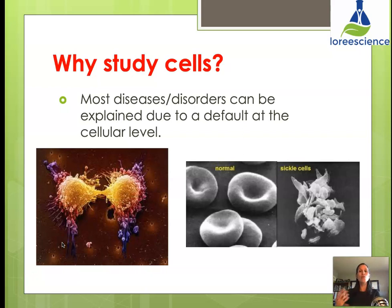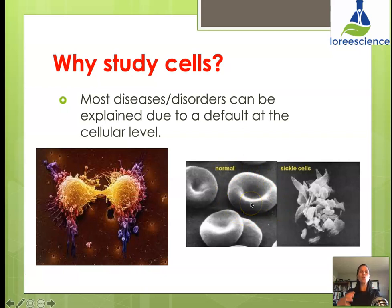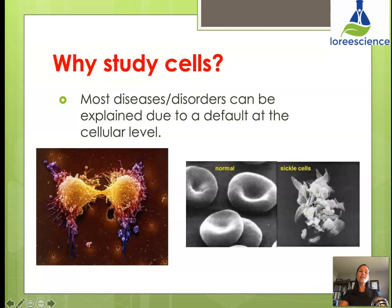If the structure changes, you can understand how a cell's job changes — such as in sickle cell anemia. A normal red blood cell is generally donut-shaped, squishy, and large. But in sickle cell anemia, the red blood cells look very different. By understanding how that shape changes, you can understand what that would do to a person afflicted with that disease or disorder.